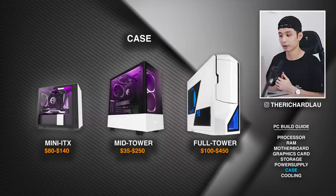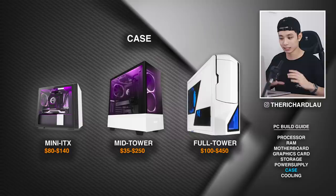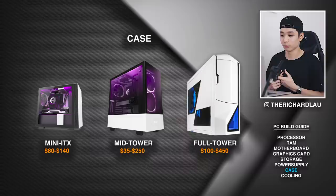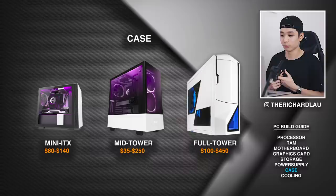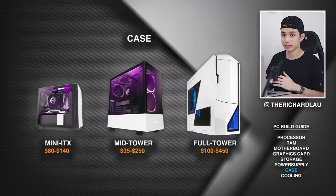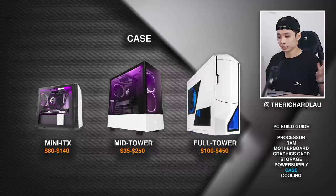Moving on to the case — there are three sizes: mini-ITX, mid-tower, and full-tower. This goes back to the motherboard choice. The mid-tower is the most popular option: it fits a full-size ATX motherboard and can fit up to two graphics cards. Cases range from $35 up to $250–$300. The case doesn't really affect performance much — maybe a little for cooling due to intake and outtake fans — but it's mainly for aesthetics. You can choose a case you like to show off your build and express yourself.